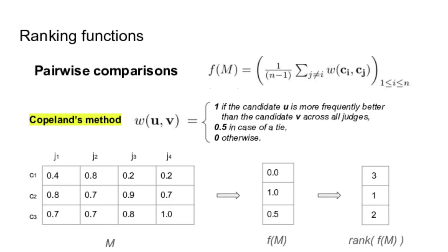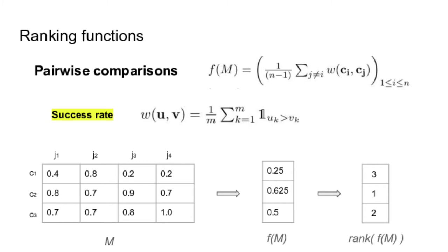Another possibility for the W function is to use a success rate. So in the case of the Copeland's method, you have a hard 1 or 0 score depending if the candidate beats the other candidate. Here, you just count the rate of time that the candidate beats the other. So this is a soft version of Copeland's method.